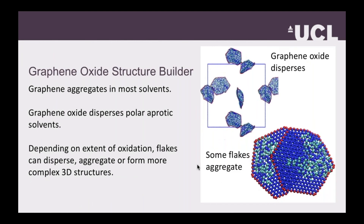Now I'm going to talk about the applications of this model. We build coarse-grain structures of graphene oxide, put that in a polymer, and we can really predict well when graphene oxide will disperse and aggregate in the material. This is a really difficult problem and one of the main challenges to working on nanocomposites. We find that large graphitic domains have very strong interactions with each other, but if we can disrupt that with more oxidization, they will disperse.